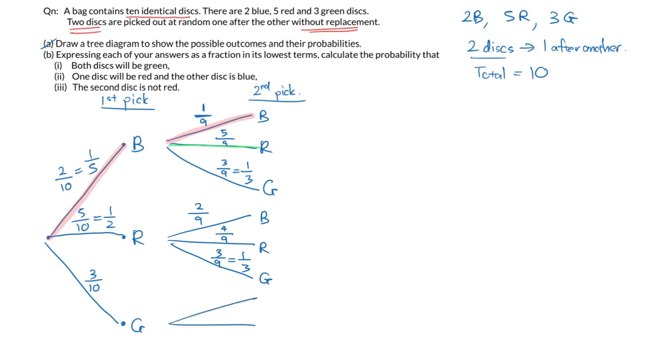Last but not least, everyone, again blue, red and green are all possible. So blue will be 2 out of 9, and red would be 5 out of 9. And lastly, green will be 2 out of 9.